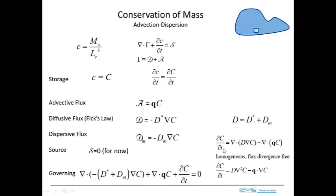And this can be simplified further where if D is uniform, if it's homogeneous, then the D comes out of this divergence operator and you have del dot del C and that's just the second, the Laplacian of C. So this term becomes that term if it's homogeneous.